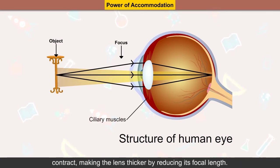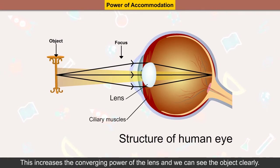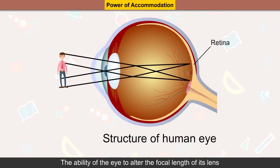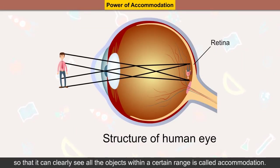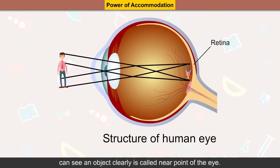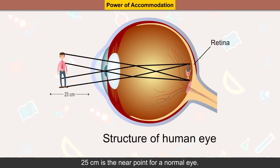On the other hand, when we look at an object close to us, the ciliary muscles contract, making the lens thicker by reducing its focal length, which increases the converging power of the lens. The ability of the eye to alter the focal length of its lens so that it can clearly see all objects within a certain range is called accommodation.